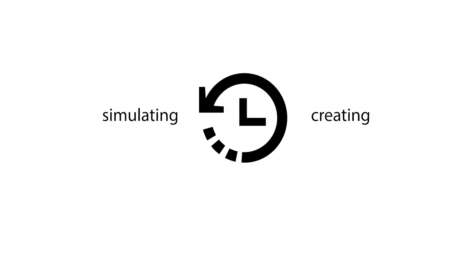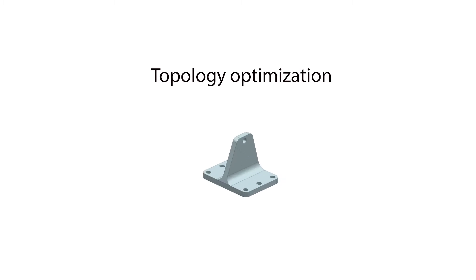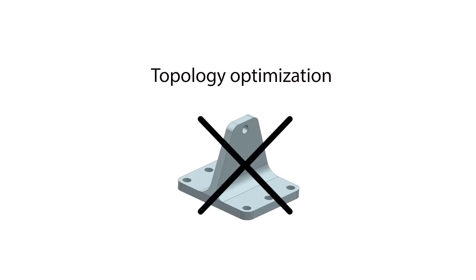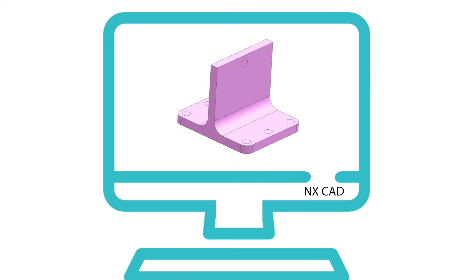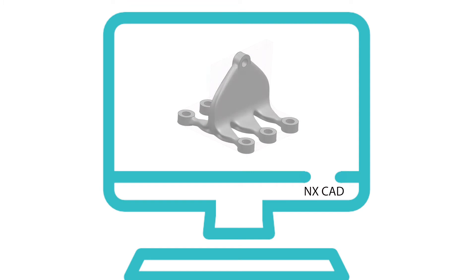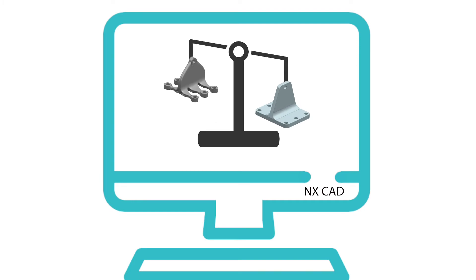Why not start with simulation instead? One of the ways to achieve simulation-driven design is with topology optimization. With topology optimization, you don't begin with a design at all. Instead, a designer within NX CAD models the design space — meaning the package space that the design would ultimately live in — and simulates it based on expected loading conditions. The result is a completely new, conceptualized part geometry that meets structural performance requirements immediately, yet is lighter than the existing design.